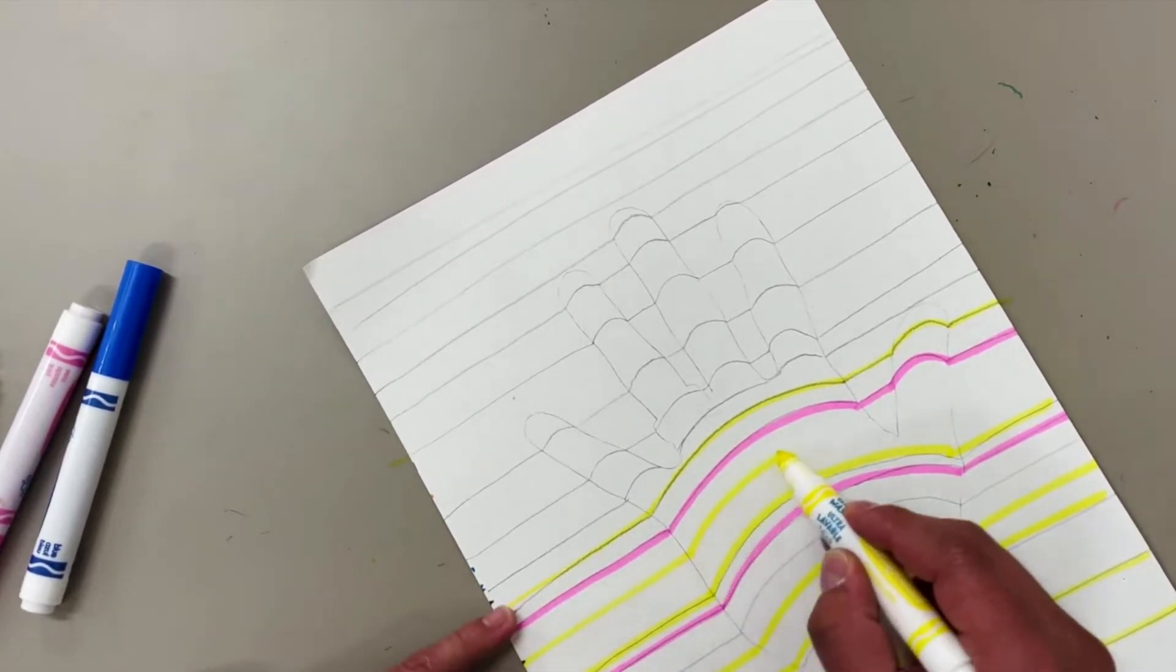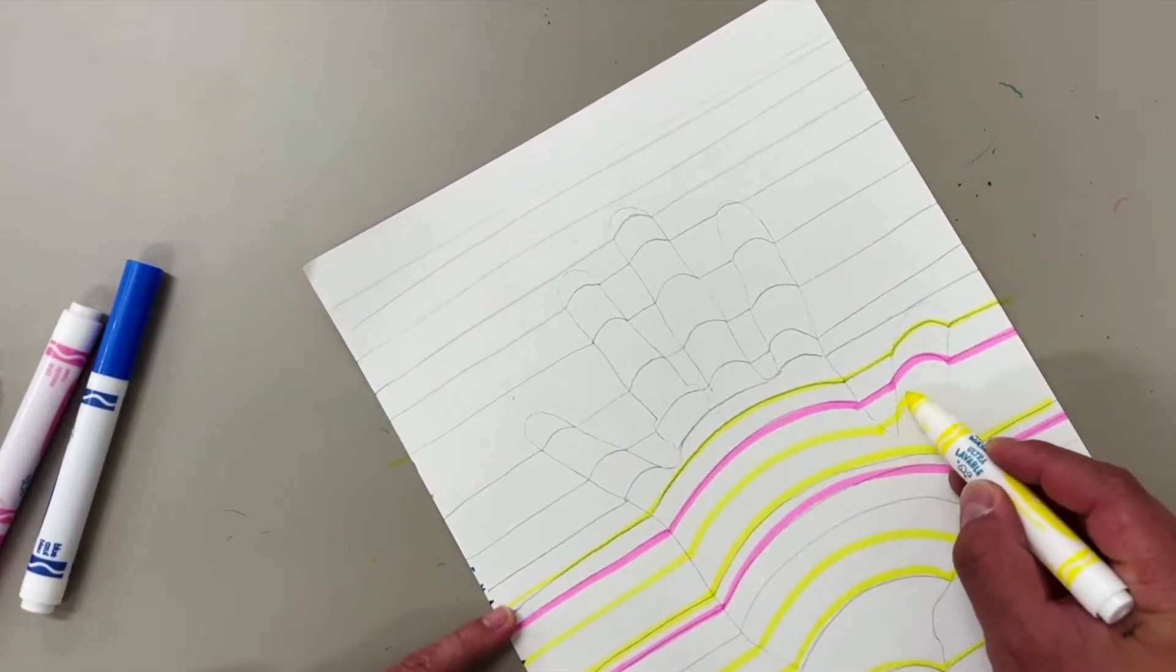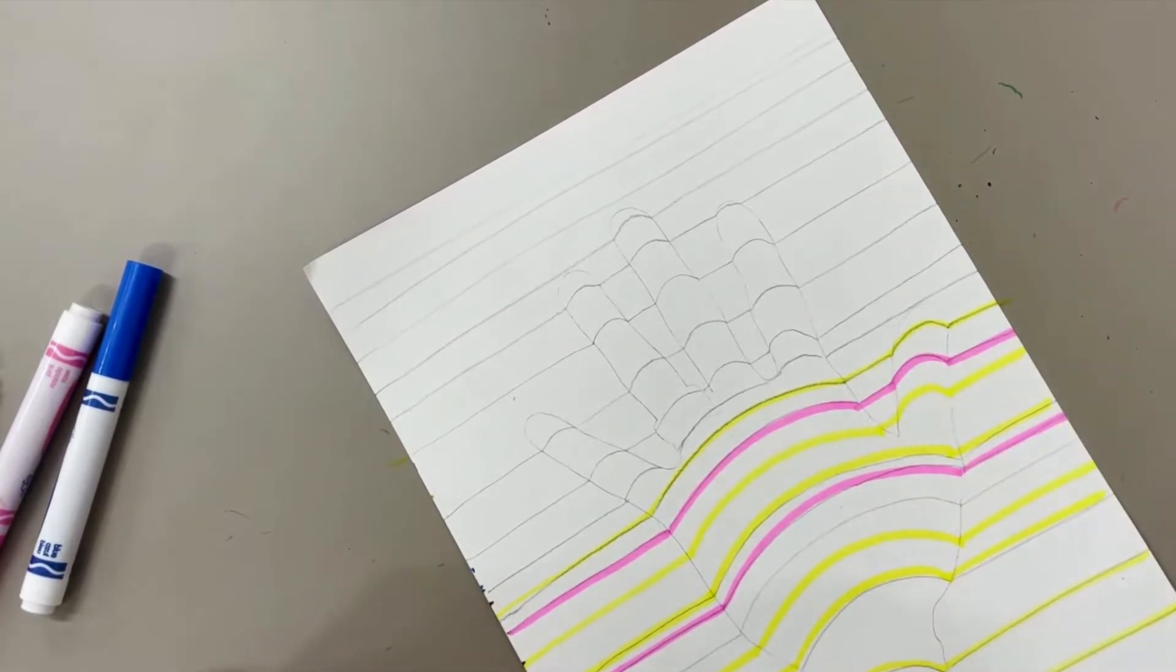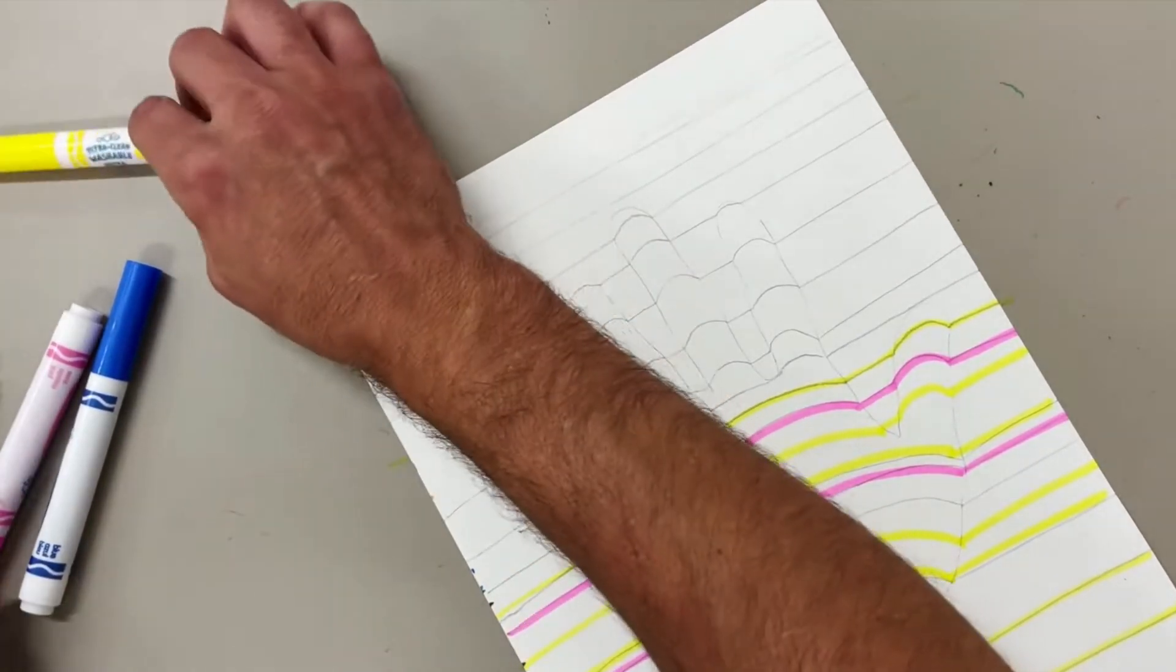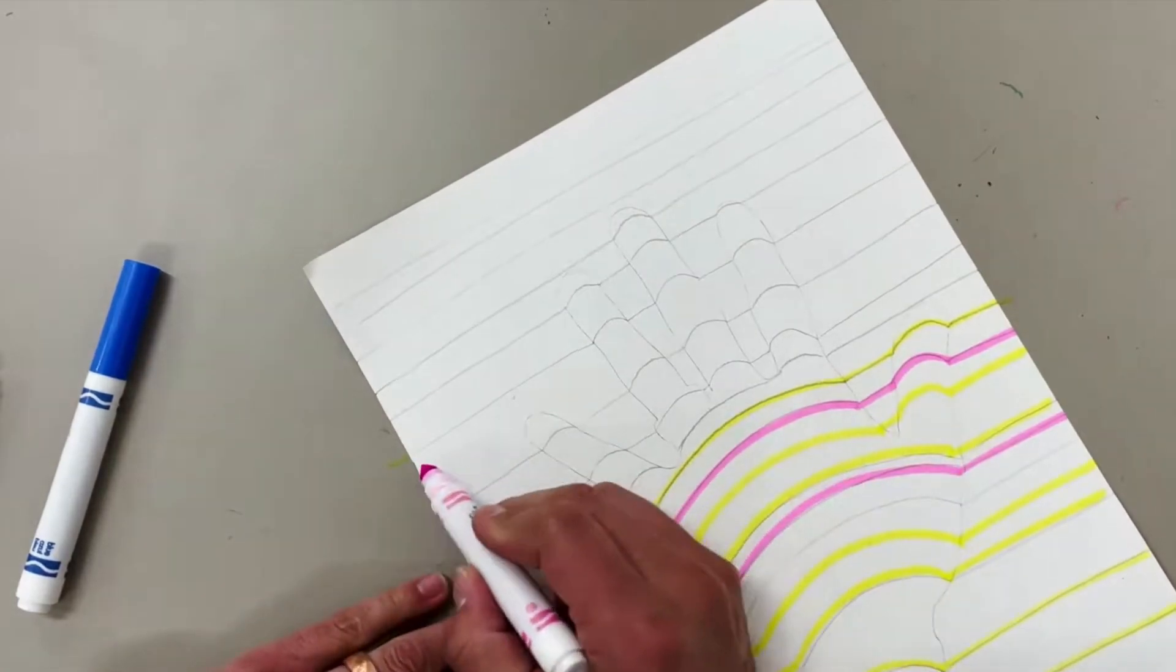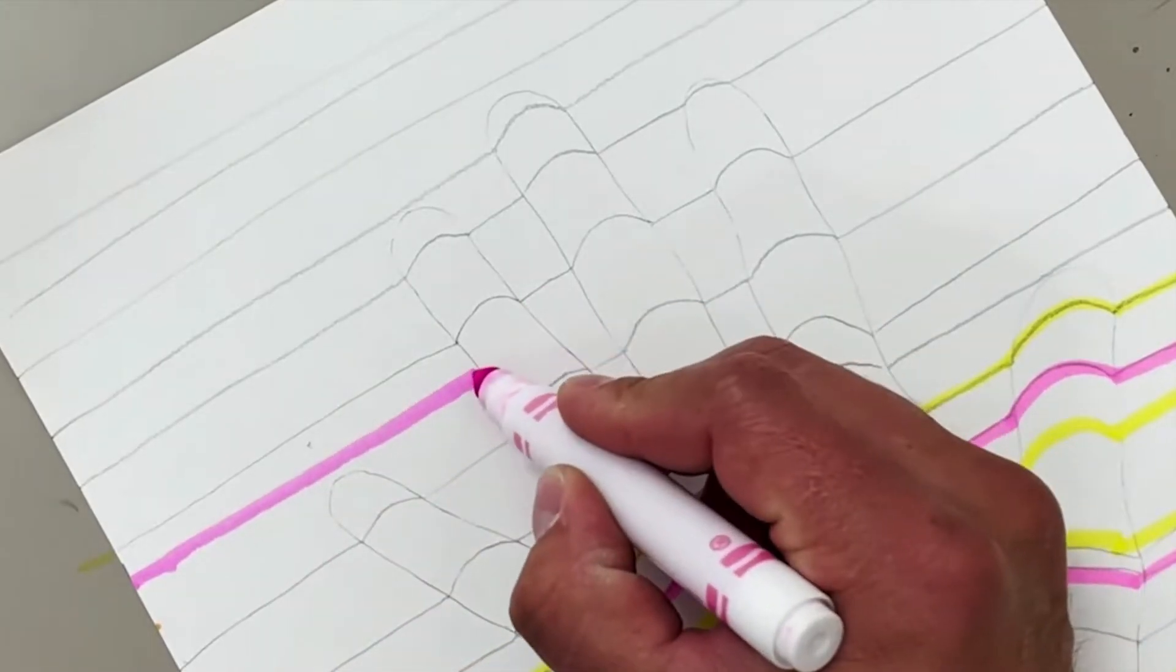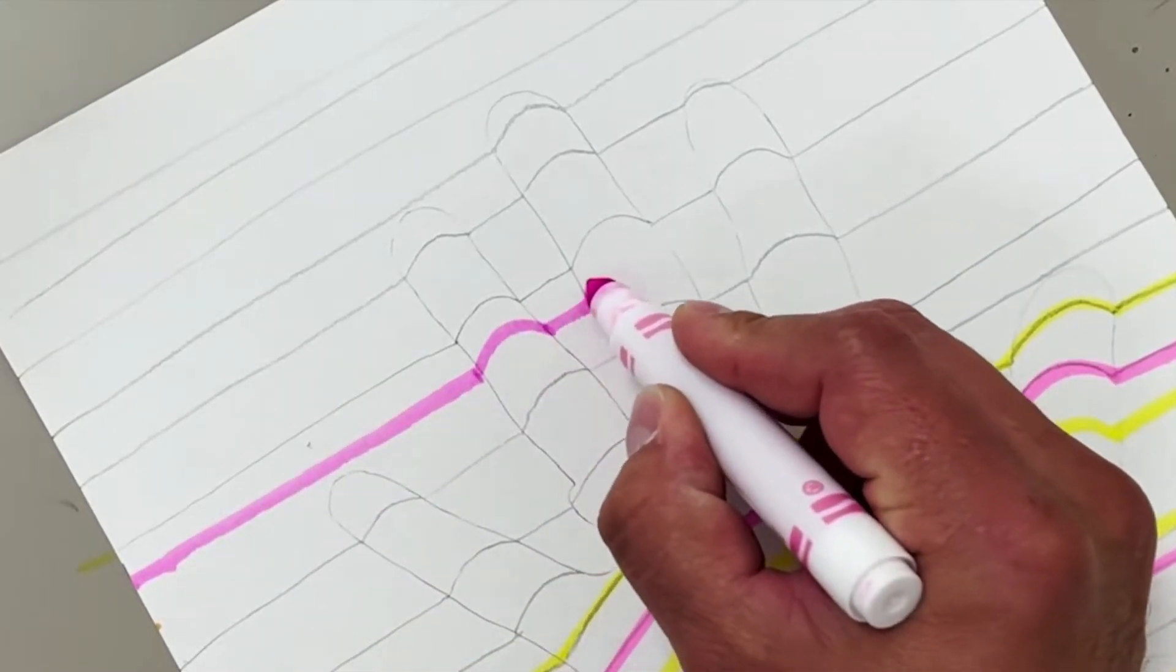Looks good. I'm going to keep going with my yellow for just a bit longer, making sure to kind of get into those details, get into those grooves. I'm going to go back over with my pink, rather. I think I can find some extra spots with my pink.